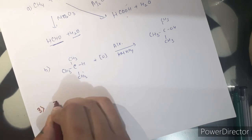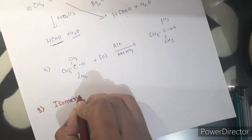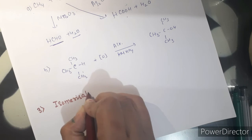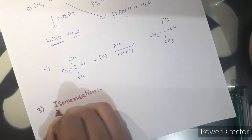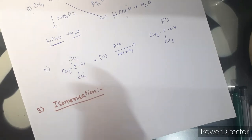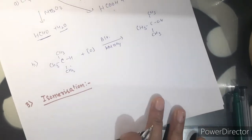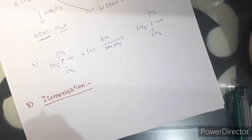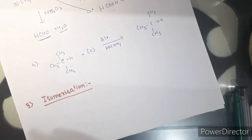Third type of reaction is isomerization reaction — the conversion of one isomer into another isomer in the presence of a particular catalyst. We know that alkanes show only chain isomers.